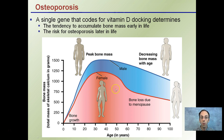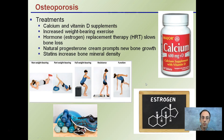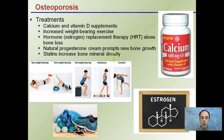That's why females have to be more concerned with osteoporosis, but it can still occur in males. Treatments include calcium and vitamin D supplements — often combined to help bioavailability. Increased weight-bearing exercises are also recommended. Hormones such as estrogen replacement therapy (HRT) slow bone loss. Natural testosterone creams prompt new bone growth, and statins increase bone mineral density. It's important to keep in mind that these hormones and treatments can have side effects, so the risk factors must be weighed against the potential benefits.